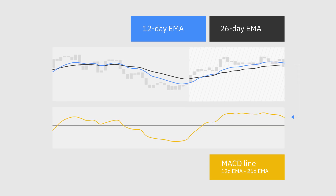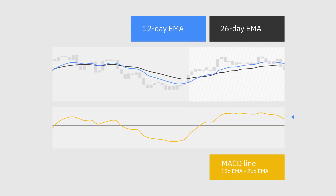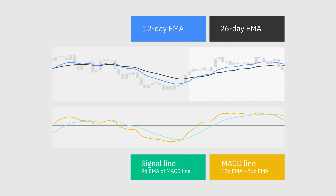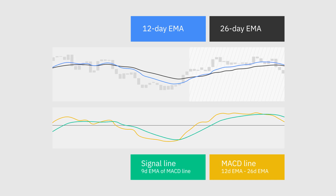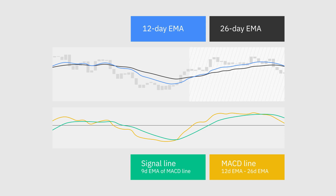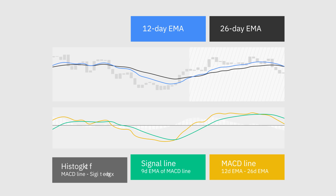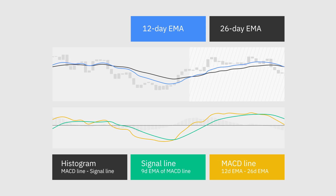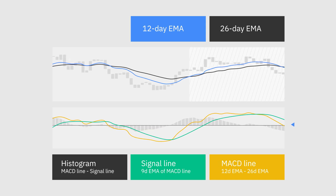This line is then used to calculate another EMA that is referred to as the signal line. In addition to the MACD and signal lines, the MACD chart also has a histogram, which is generated based on the differences between those two lines.